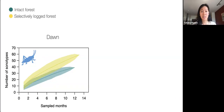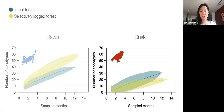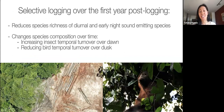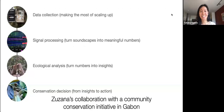During the dusk, the logged site had a lower accumulation of bird sonotypes over time compared to intact forest, suggesting a decrease in bird temporal heterogeneity with selective logging. Our soundscape analysis allowed us to see the effect of logging over 24 hours and to analyze temporal changes in composition — a pattern overlooked in spatial studies. Our results suggest that selective logging over the first year post-logging reduces species richness of diurnal and early-night sound-emitting species and changes species composition over time, increasing insect temporal turnover over dawn and reducing bird temporal turnover over dusk.